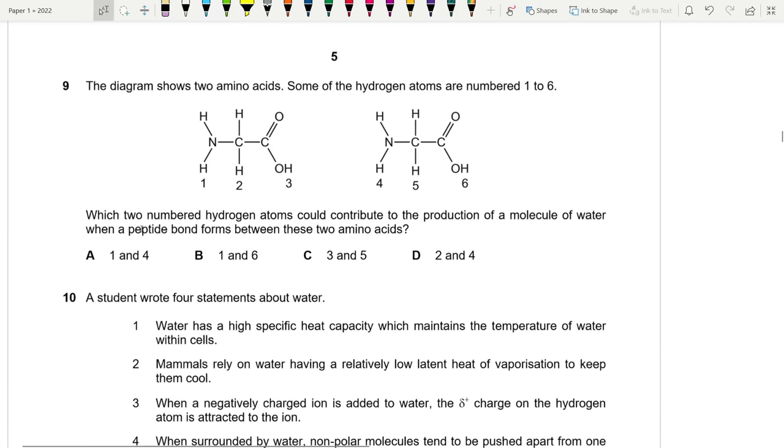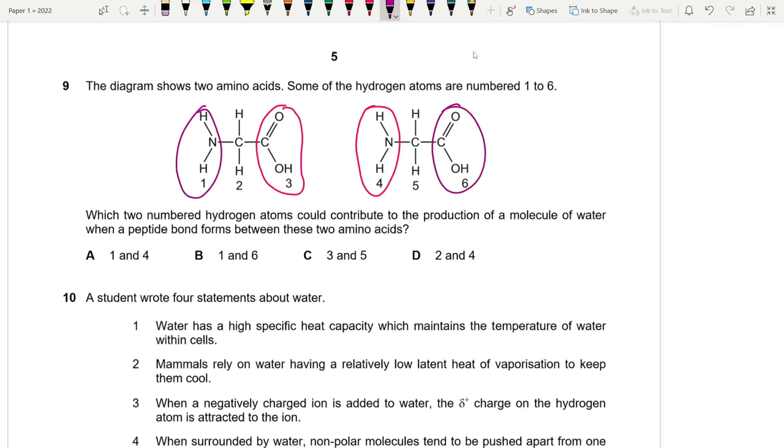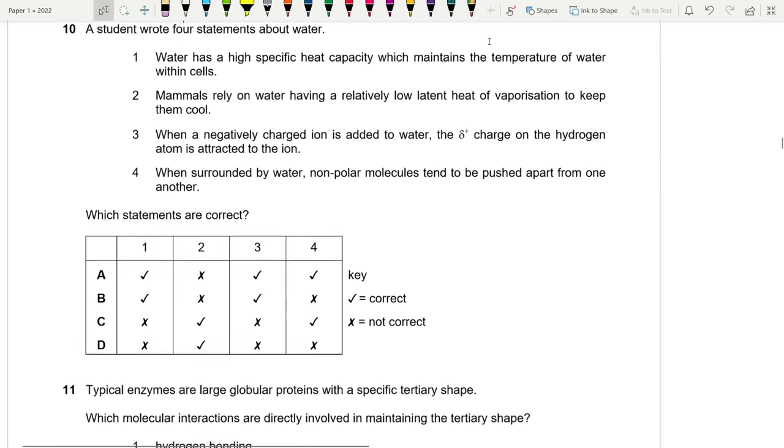The diagram shows two amino acids. Some of the hydrogen atoms are numbered one to six. Which two numbered hydrogen atoms could contribute to the production of a molecule of water when a peptide bond forms between the two amino acids? Essentially, a peptide bond forms between the carboxyl end of one amino acid and the amino group of another one. Here, it can either be this. Let me do the color coding. Six can bind with one. So it's either three, four, or one, six. My brain just froze for a second.